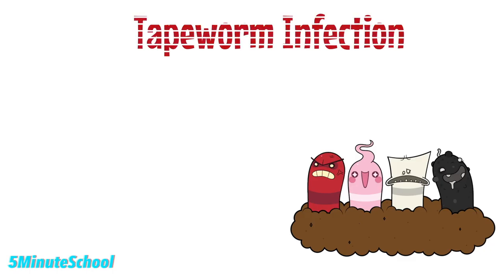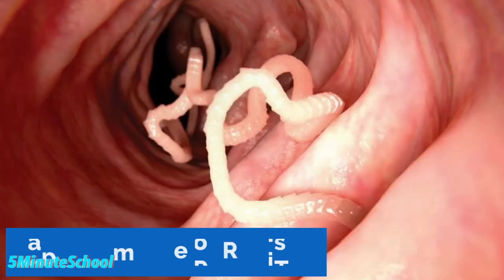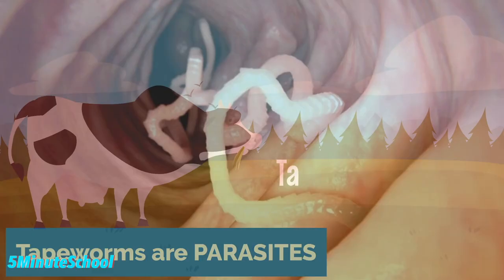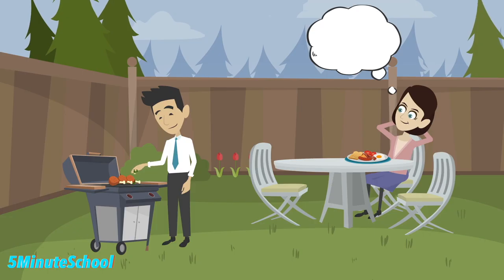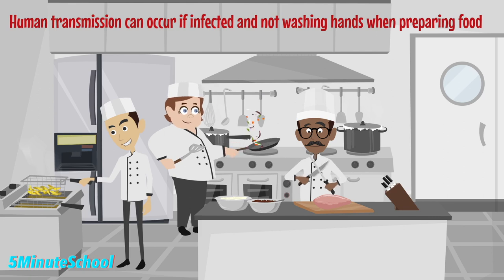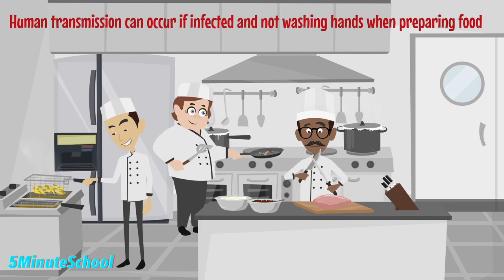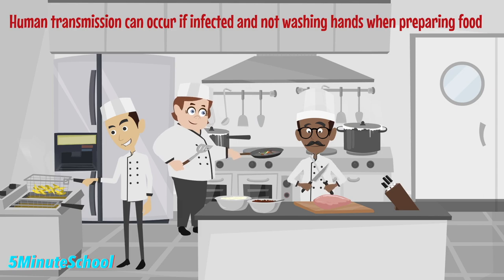Tapeworms are flat and segmented worms which live in the intestines of some animals. Tapeworms are considered to be parasites and they infect animals when they are ingested, either through contaminated water or food. Tapeworms can affect humans if the human eats meat from contaminated animals. A tapeworm infection can also be passed via human transmission — if an infected person doesn't wash their hands after using the bathroom and starts preparing food, there may be transmission of the larvae to anyone who eats the food.